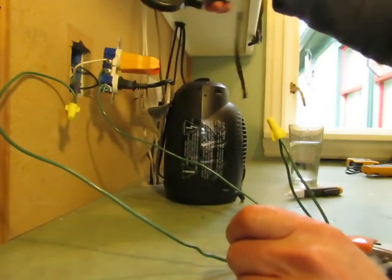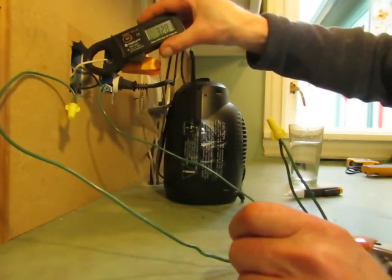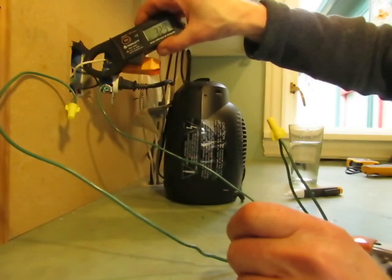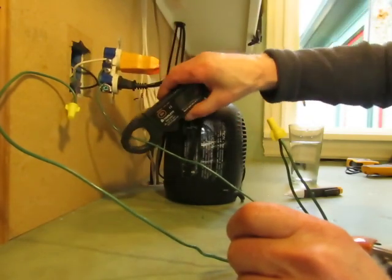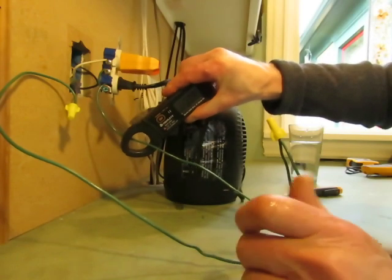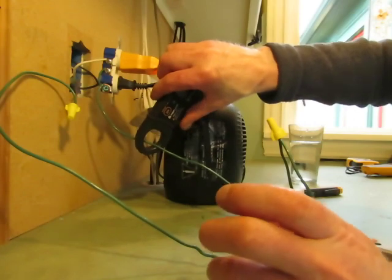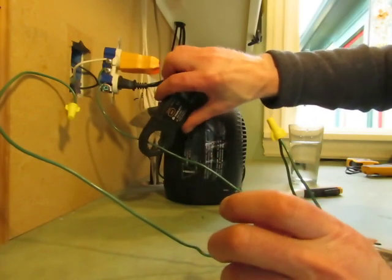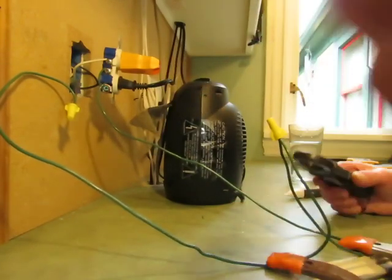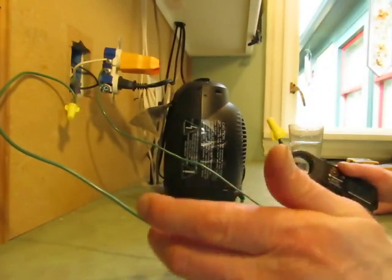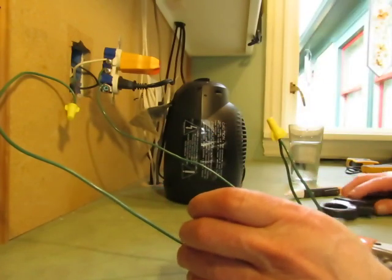So now our amperage on the neutral is 3.3 amps, and on this wire here it's 3.7 amps. Pretty similar. It could be other things running on the circuit that's making it different, but at any rate, that shows how that amperage gets cut in half when you have two paths.